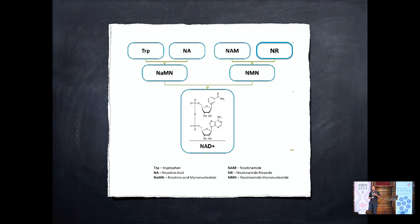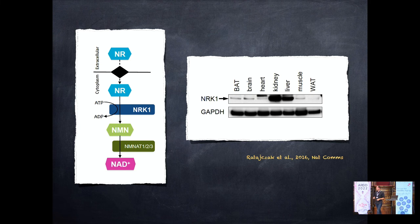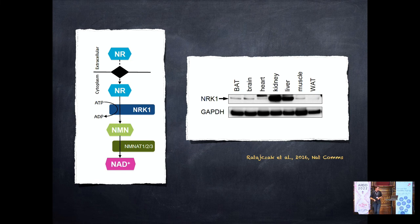The way we approached this question was to learn more about nicotinamide riboside metabolism and identify whether there are unique functions to it — and if so, whether it's the better compound to use for clinical trials or human subjects. Nicotinamide riboside, once transported into the cell, requires the activity of nicotinamide riboside kinase 1 (NRK1) to be transformed into NAD. NRK1 is quite widely expressed across the body, with the liver and kidney showing the highest expression.